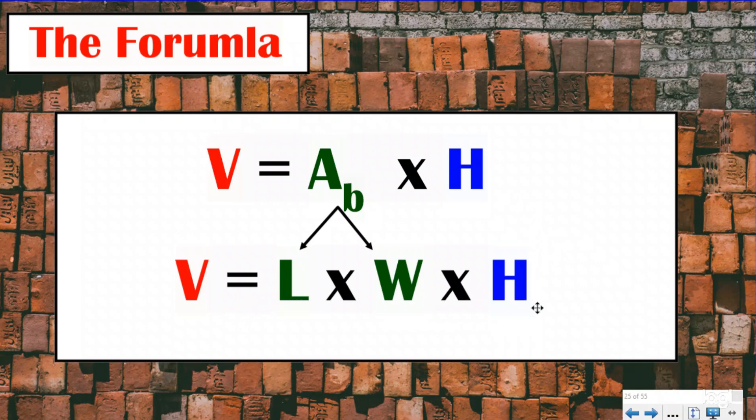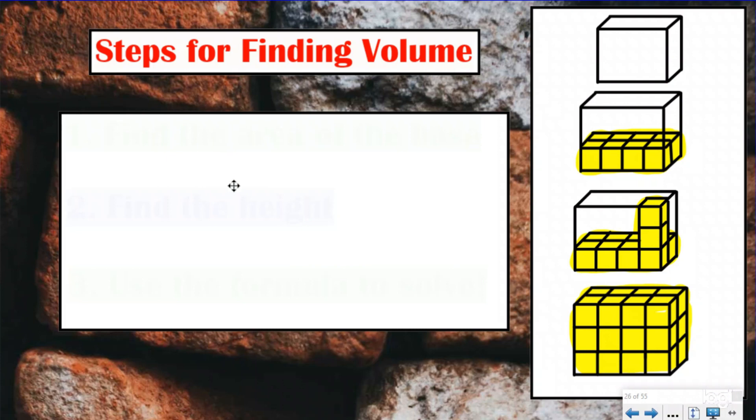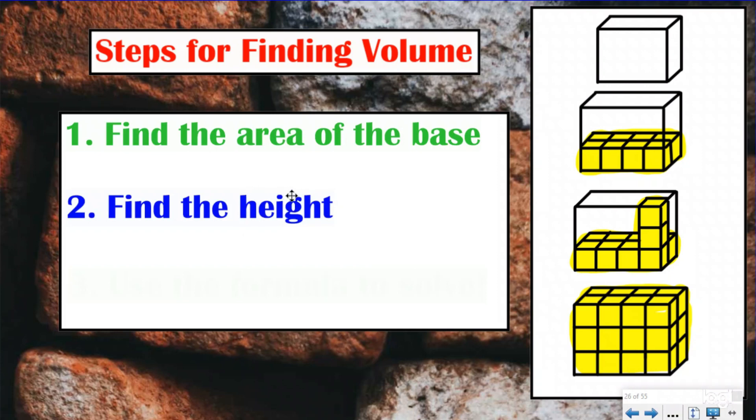Both of them are going to give us the exact same answer. We just have to figure out which formula we need for the question that we're answering. Our steps for finding volume are going to be the exact same thing: find the area of the base, find the height or how many layers we have, and then use the formula to multiply instead of using repeated addition.